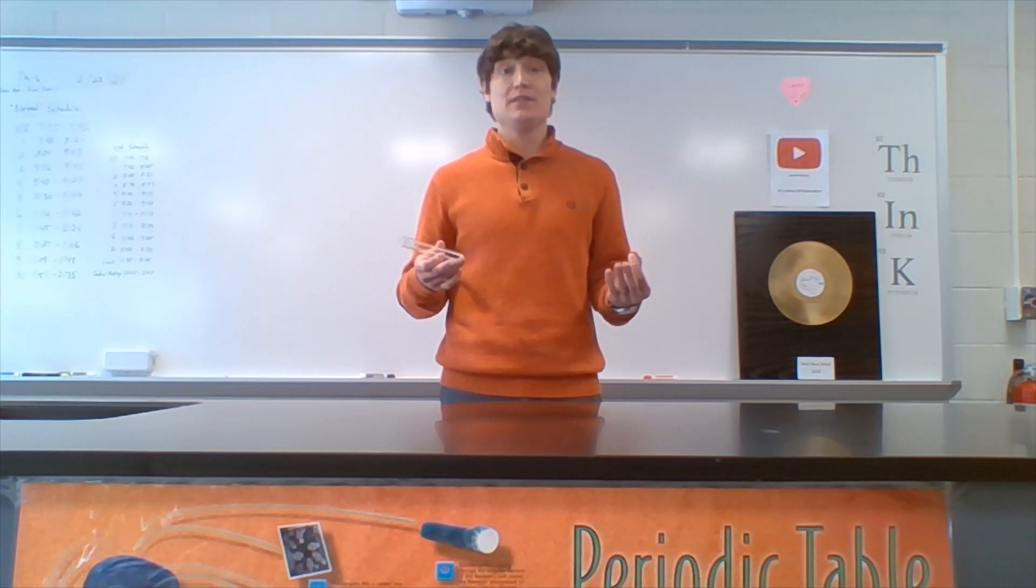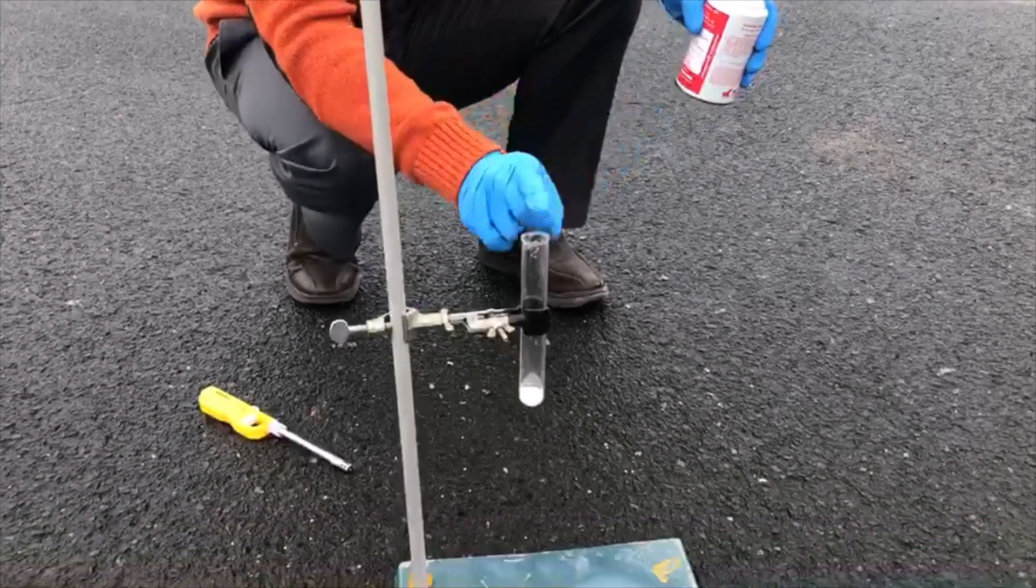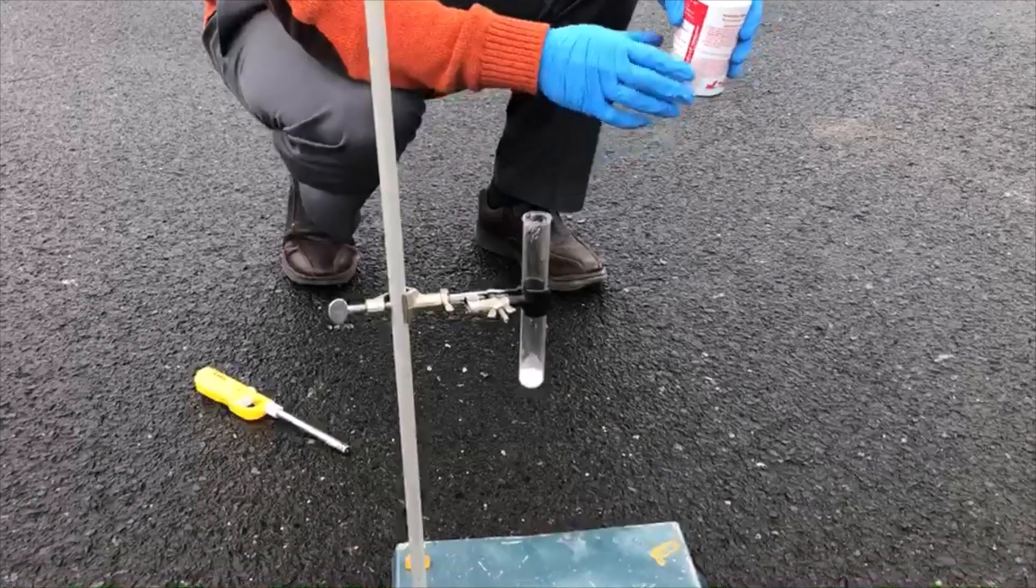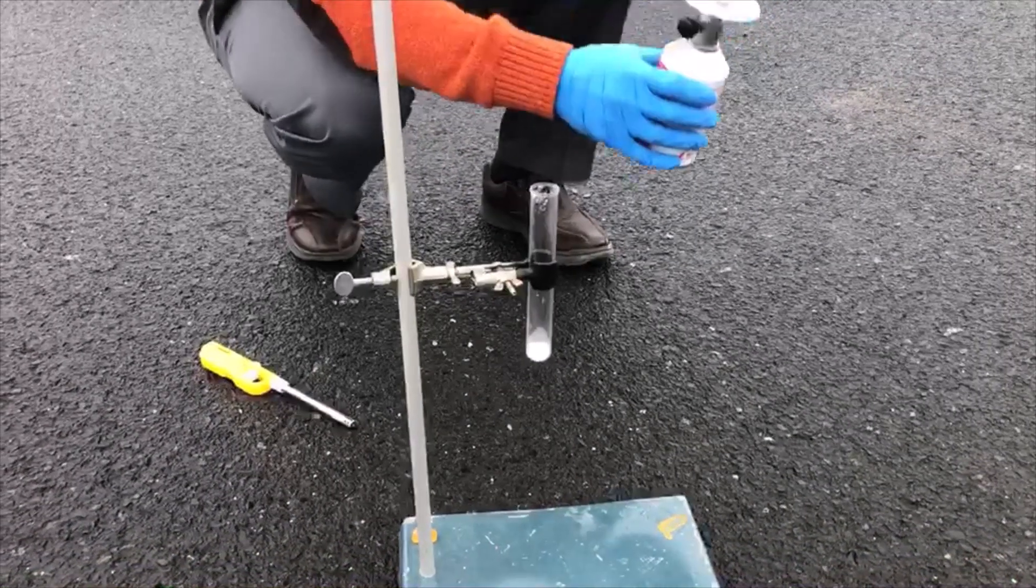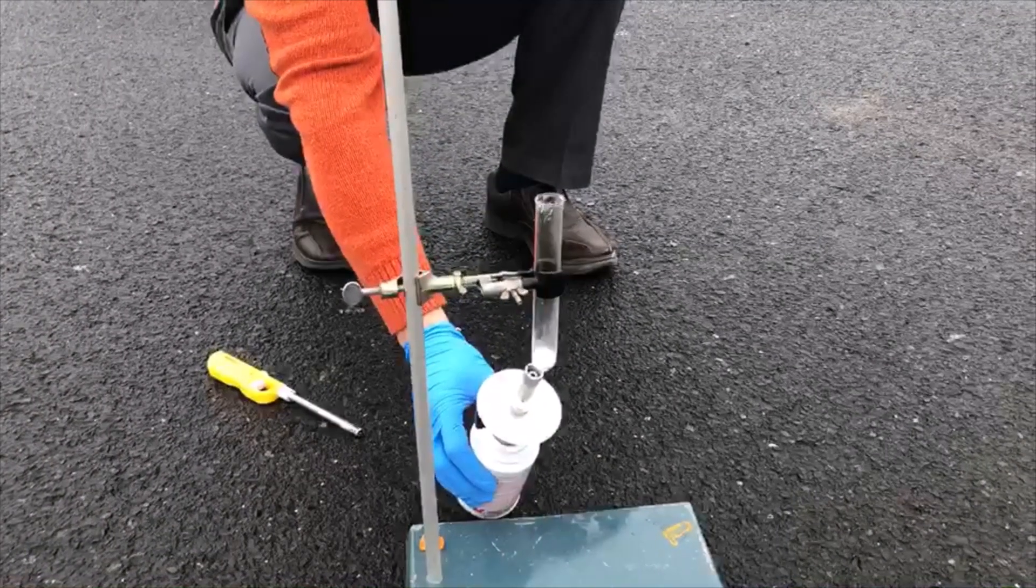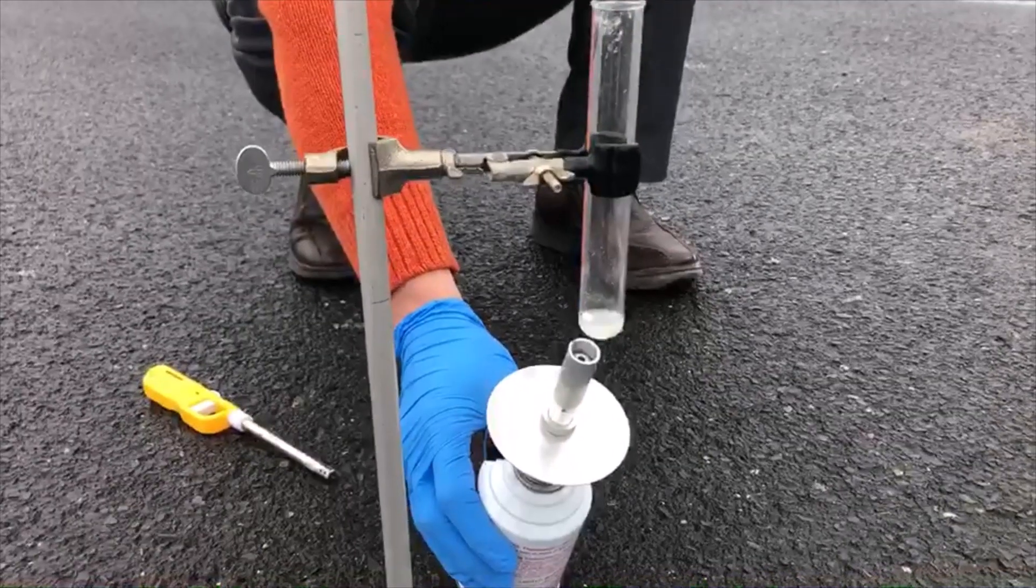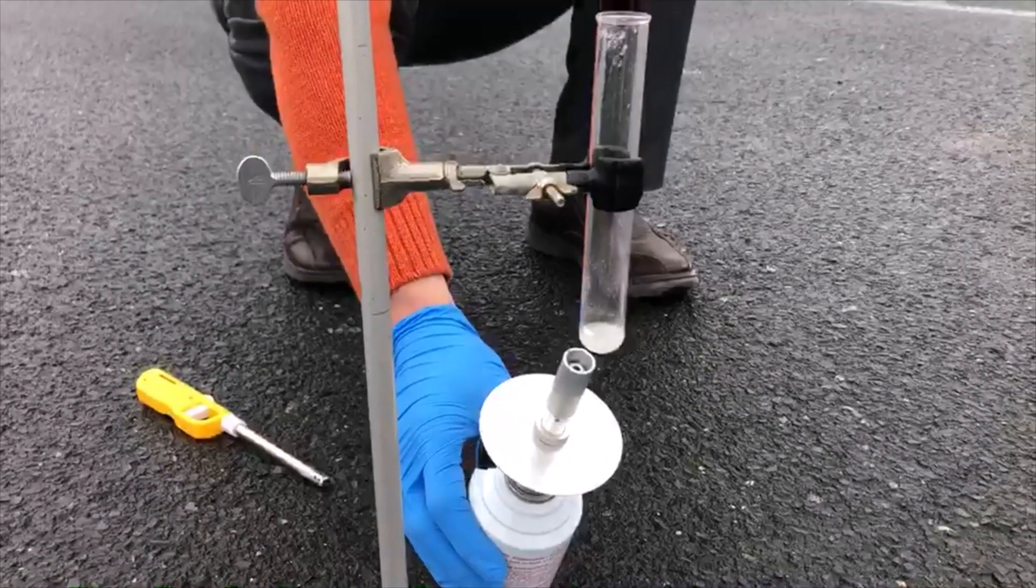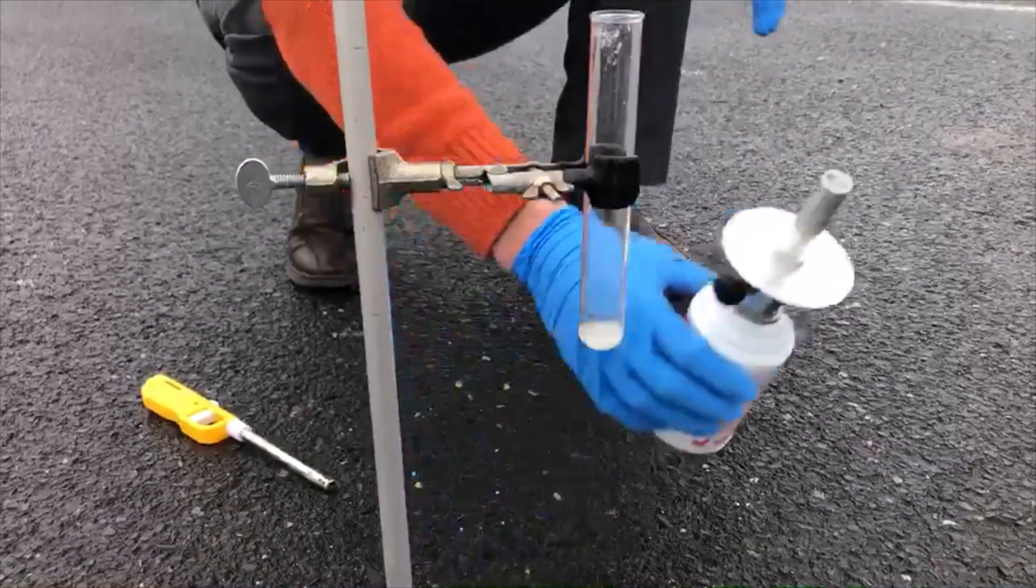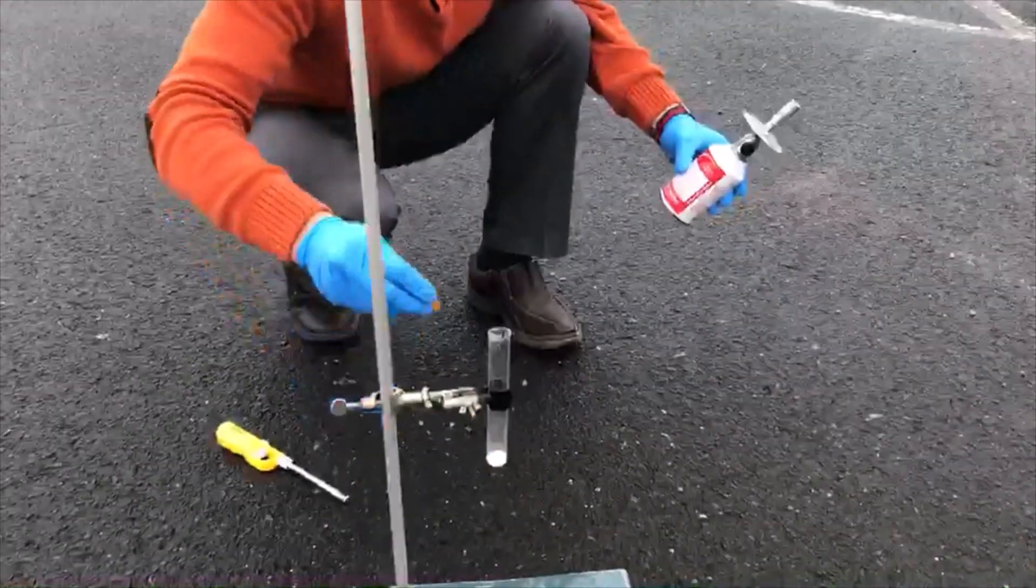Step one: we're going to add potassium chlorate to a test tube. Step two: we're going to heat the potassium chlorate until it melts. Next, we'll put our gummy bear into the test tube and observe.